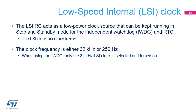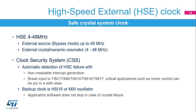The low-speed internal, or LSI, oscillator is the unique clock of the independent watchdog and can be the clock of the RTC. It can be kept running in all stop and standby modes. Accuracy of the frequency is ±5%. The clock frequency is either 32 kHz or 250 Hz. When using the independent watchdog, 32 kHz operation is selected and forced on.